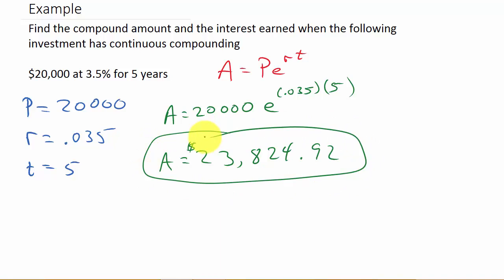Now, they also want the interest. So, the interest, well, that's going to be the compound amount minus the amount you deposited.